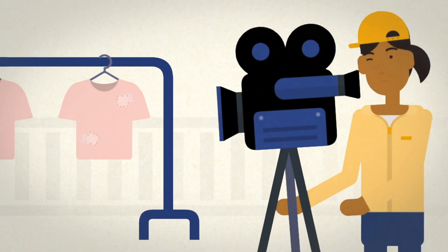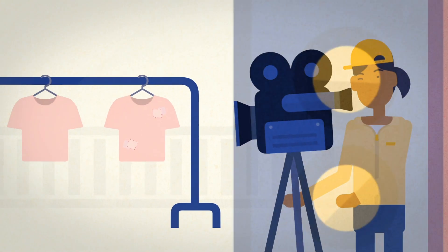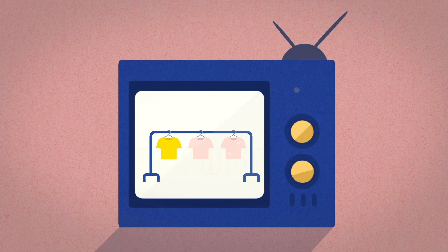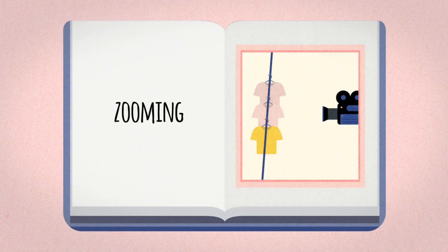Basically, we apply camera movements according to what kind of information we want to show the audience. There are a few camera movements which are commonly used when making videos.